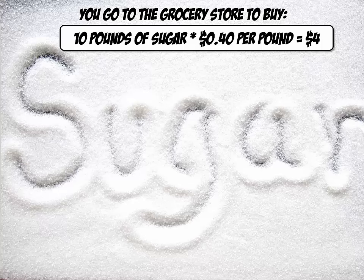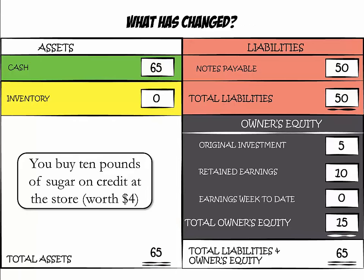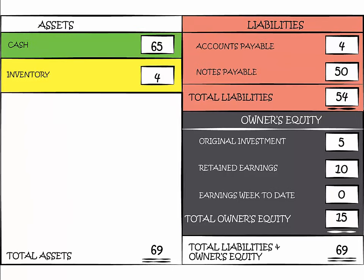You go back to the grocery store and buy 10 pounds of sugar at 40 cents per pound. Your total cost for the sugar is $4. You know that cash is valuable, so you convince the owner to let you buy the goods on credit. You sign a piece of paper which says you owe him $4. Inventory has gone up from $0 to $4, bringing total assets to $69. You also have a liability because you still have to pay the grocer $4 in the future. We call this liability accounts payable.